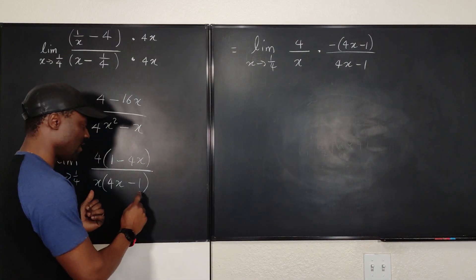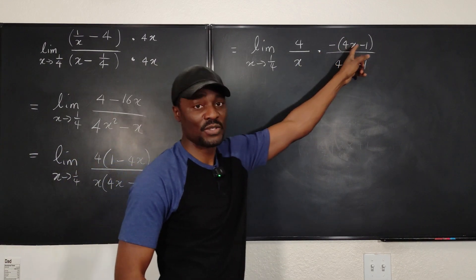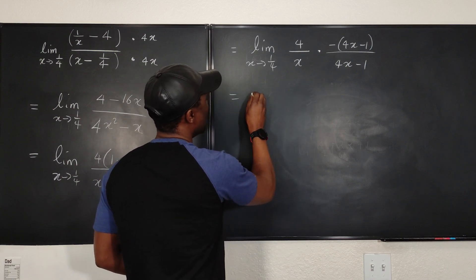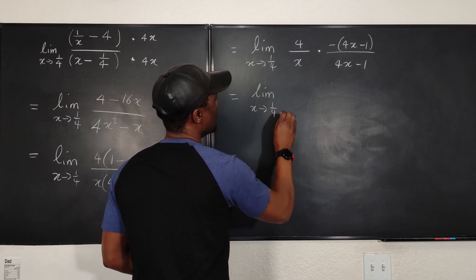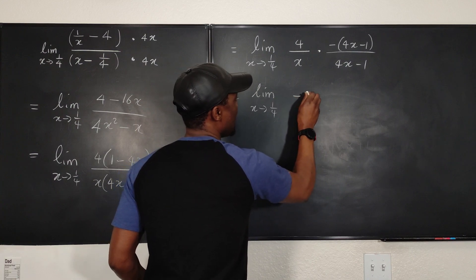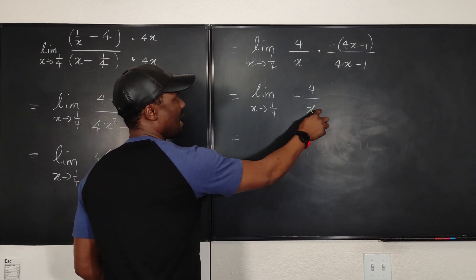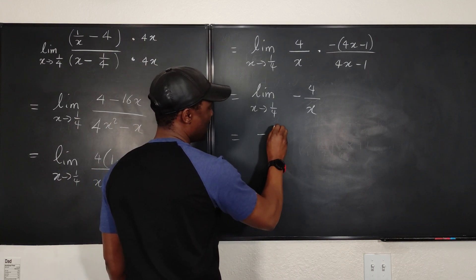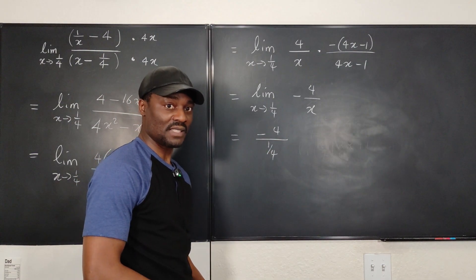Do you see that? I didn't change the bottom. I just switched the top to the negative version of it, which is still the same thing because when you distribute this, that's what you have. And this is equal to the limit as X goes to 1/4 of... Well, this is a negative 1 times 4/X. That's going to be negative 4/X. Now I can plug in my X for this one, and this is going to be negative 4 over 1/4.